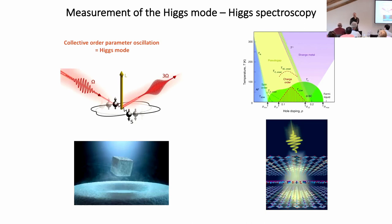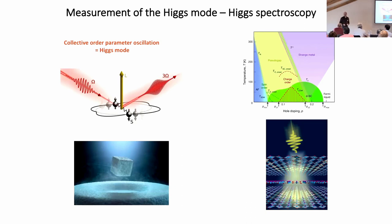An audience member raises a question about whether seeing the Higgs mode - an amplitude fluctuation - provides information beyond just the orientation of the order parameter. The speaker responds that there will also be responses when you have only short-range coherence in the system, so the signal appears sensitive to finite pairing amplitudes. The speaker further clarifies that using 2D spectroscopy techniques with two superimposed pulses, one can distinguish whether a response is due to a finite pairing amplitude or truly long-range order.